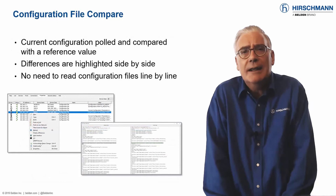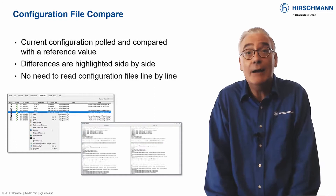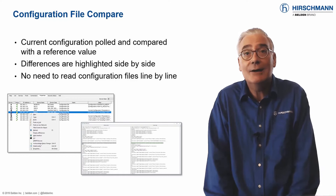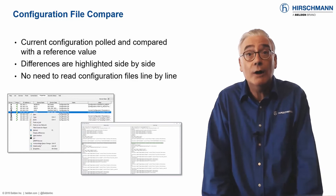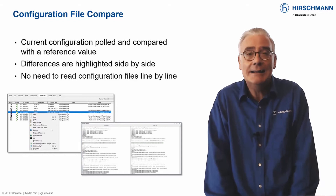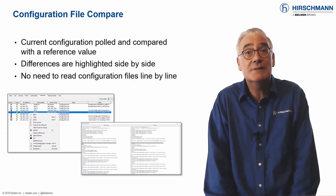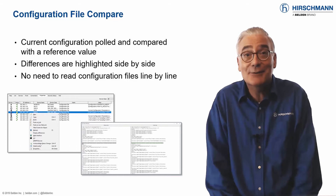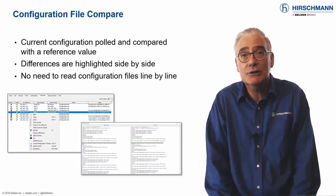Industrial HiVision includes great tools to warn you when the configuration of a network device has changed. But that still leaves you with the challenge of working out exactly what has changed. You could spend hours comparing the previous and current configuration files manually, or you could use the configuration file compare tool. This gives you a side-by-side comparison of a device's previous configuration and its current configuration. Changes are color-coded, making them simple to detect. Use this tool to save time and frustration when dealing with unauthorized changes to device configurations.